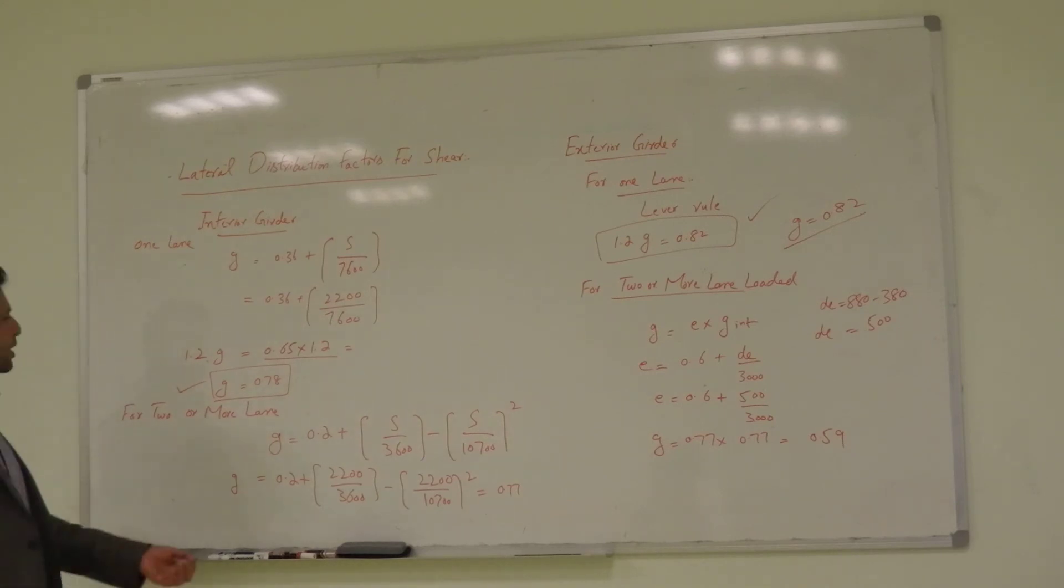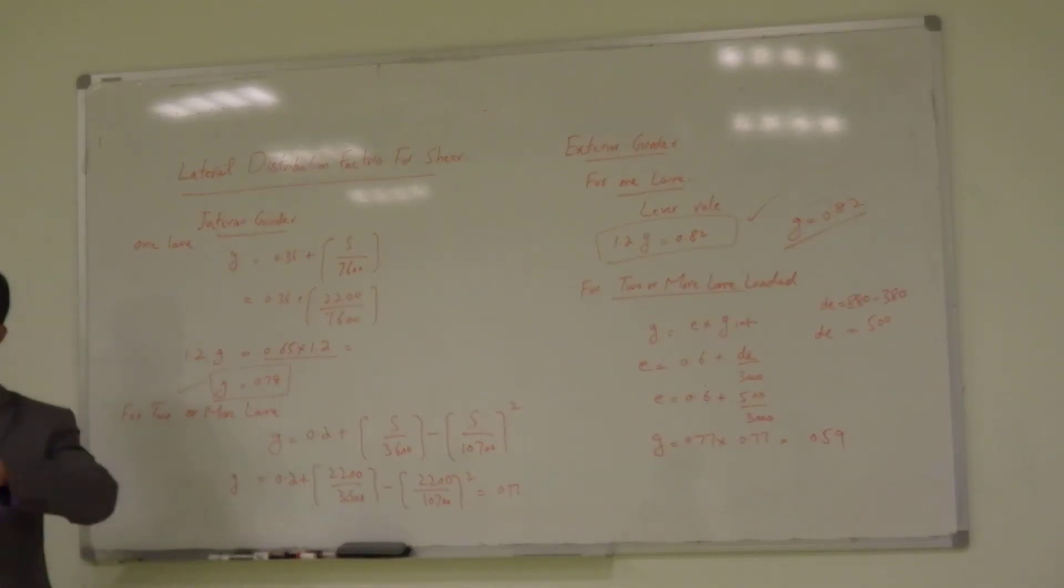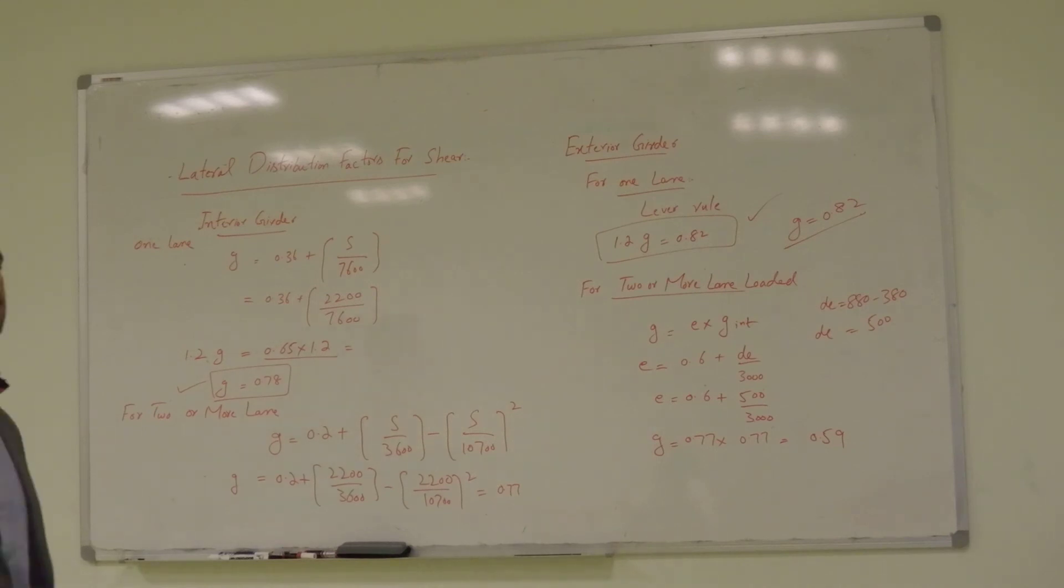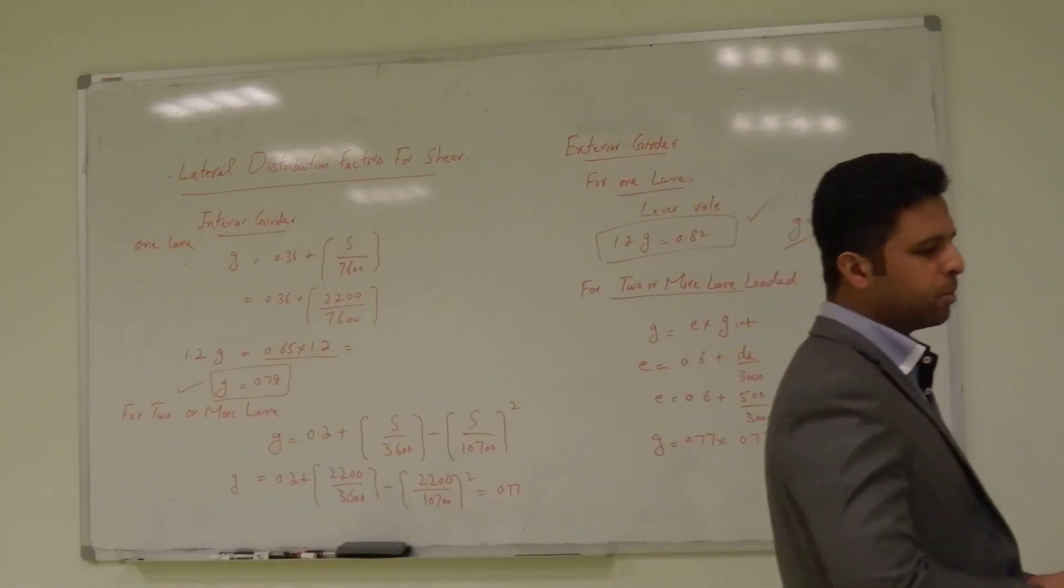So, either you can multiply the axle load at the beginning or at the end, you can multiply by the G. For example, either you multiply G at the beginning, make it 78 or at the end, use 100 and at the end, multiply by 0.78, you will get the same value. It will not make any difference.